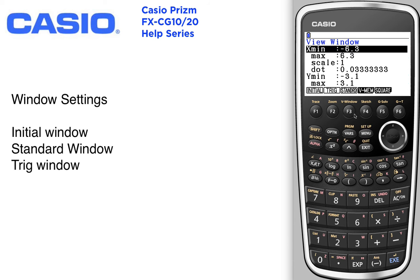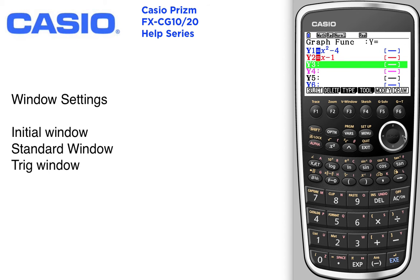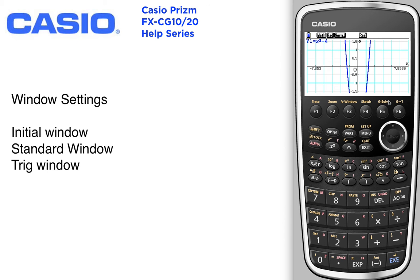Other types of windows are the trig window. In this case, since we're going by radians, we've got our window set up according to that. So we go ahead and draw that. There you are — according to radians, you can tell the mode you're in right at the very top.